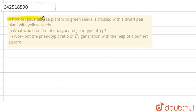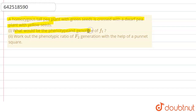The question here is that a homozygous tall pea plant with the green seed is crossed with the dwarf pea plant with the yellow seed. What would be the phenotype of the F1 generation, and work out the phenotypic ratio of the F2 generation with the help of the Punnett square? So let's see the answer now.